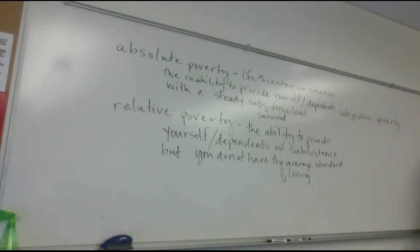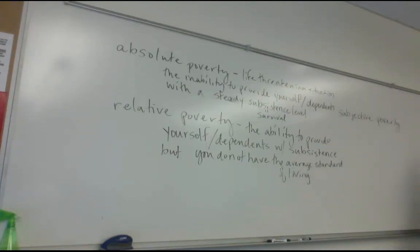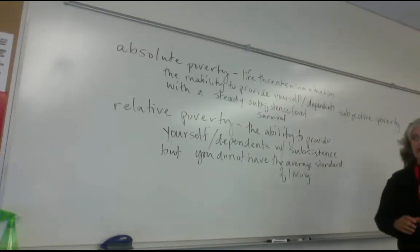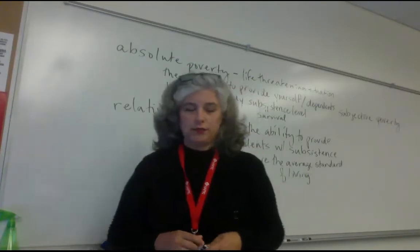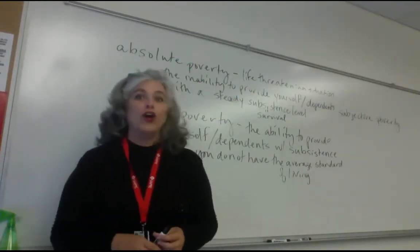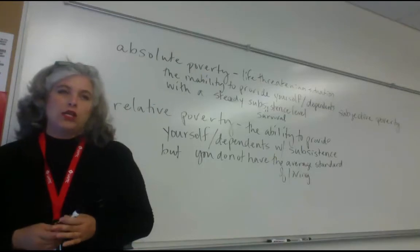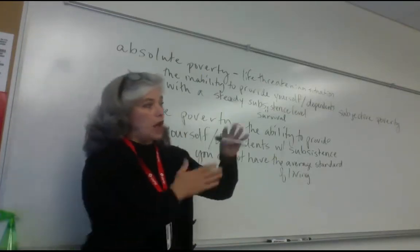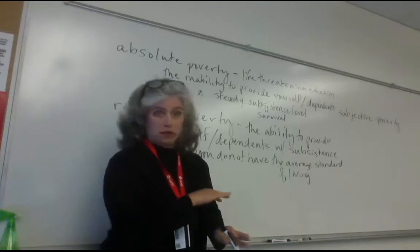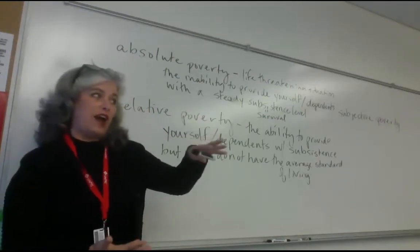Absolute poverty means there's always the threat that your life or a dependent's life could end because of the situation. You can't get the proper amounts of subsistence to survive. Food stamps, WIC, or similar government programs are precisely there to assist people in the underclass and working poor in the United States — they're safety nets to prevent absolute poverty.